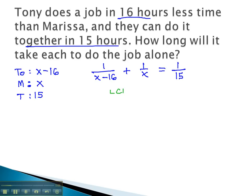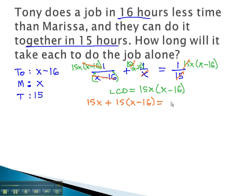We can start solving by identifying the least common denominator, remembering the x minus 16 is a binomial, so we have 15x and x minus 16. Multiplying each term by the 15x times x minus 16. We can then go back and see what divides out. The x minus 16's are gone, leaving 15x, plus the x's divide out, 15 times x minus 16, equals the 15's divide out, x times x minus 16.